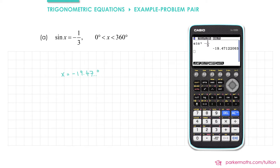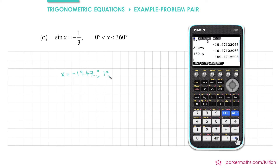Before we go on to any more calculations it might be helpful to store this value in our calculator, so I'm going to store it as a. Next up I'm going to apply the symmetry property. The symmetry property for sine says we take our first solution and subtract it from 180, so we're going to do 180 subtract a, which is stored in our calculator, and that gives us 199.4 degrees. I'm writing down four significant figures so that I can round appropriately.